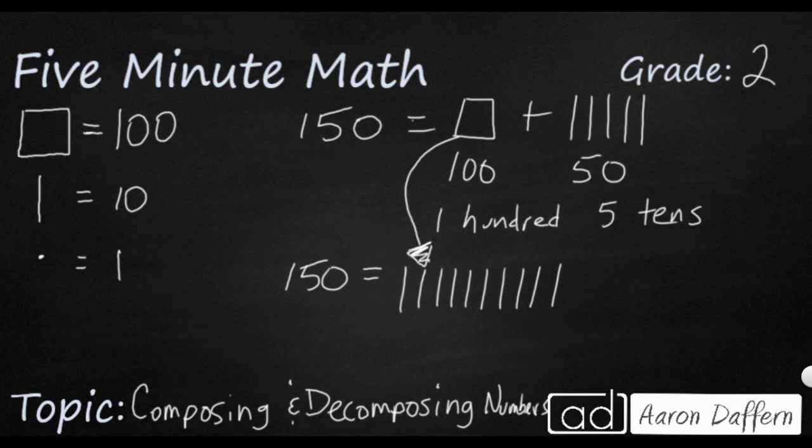So I've got 10 tens right there. That's my 100. And I could take these five 10s and bring them back down here. 1, 2, 3, 4, 5. So if you count all of it, you are going to have 15 tens. And so the number 150 can be made with 15 tens.